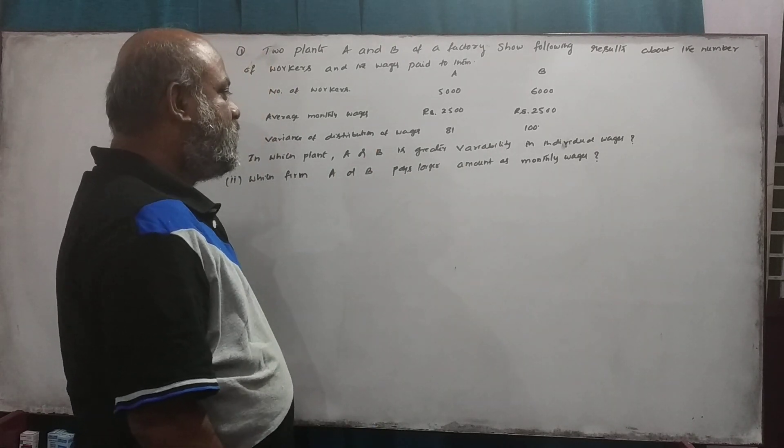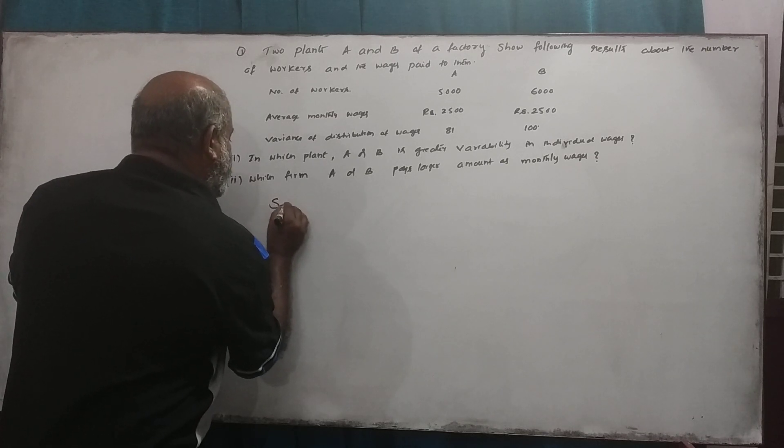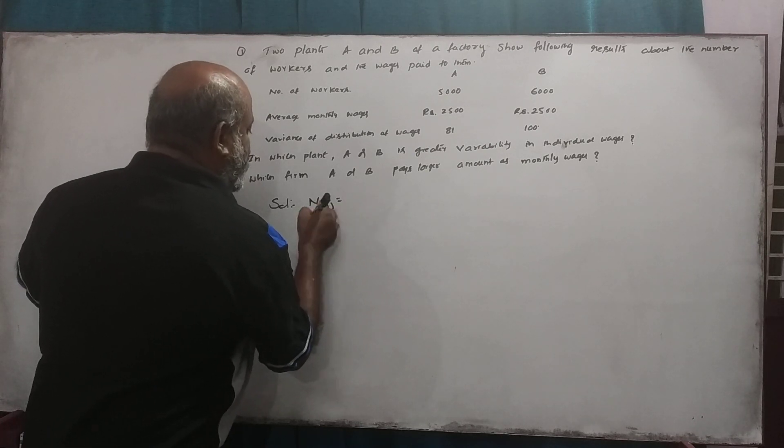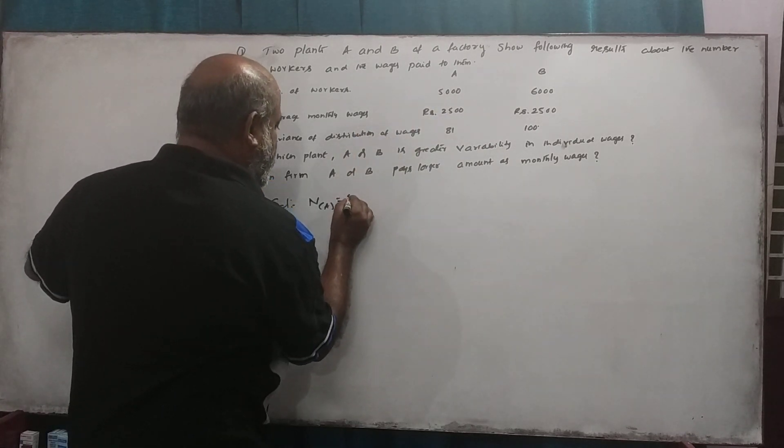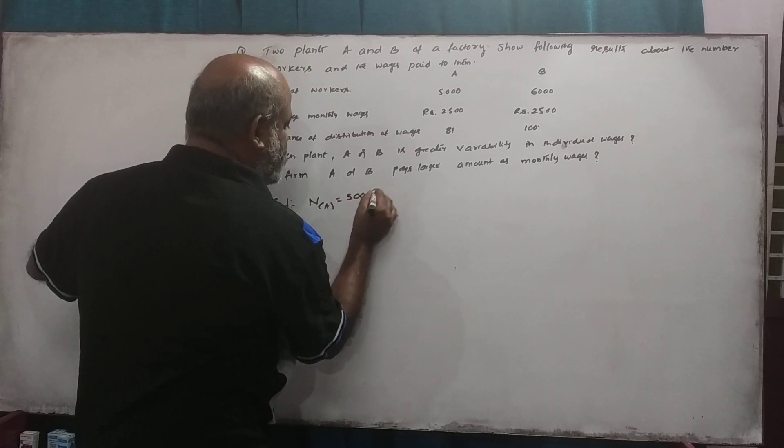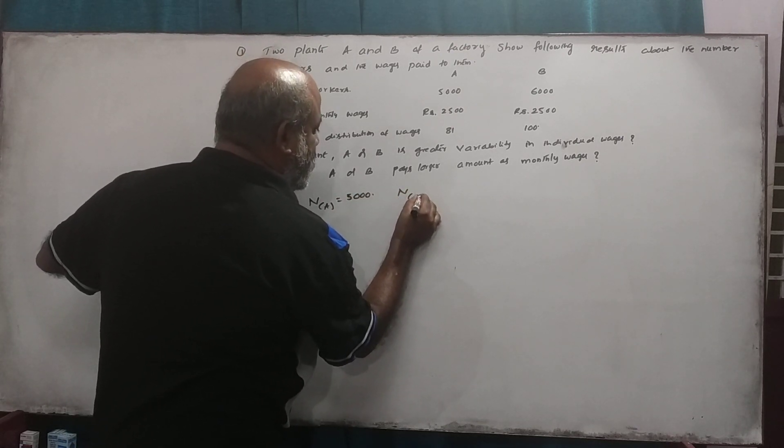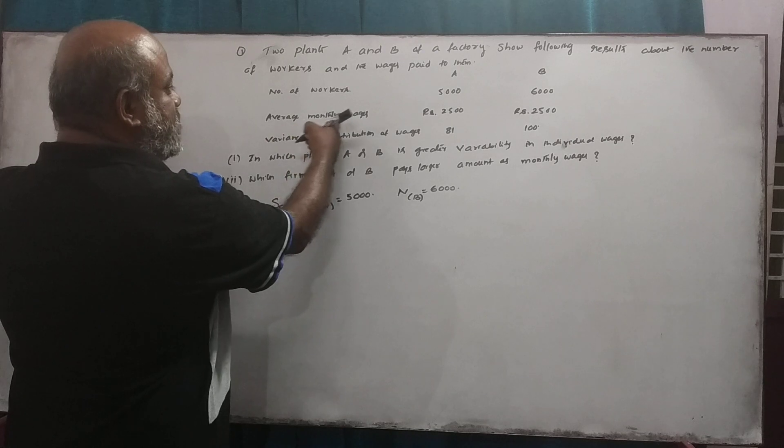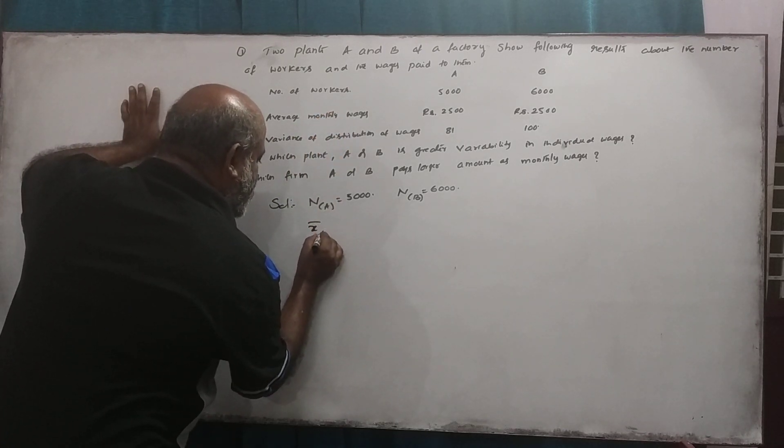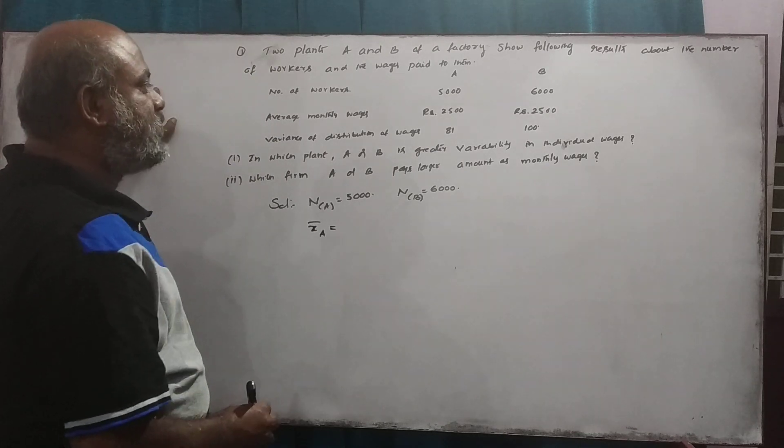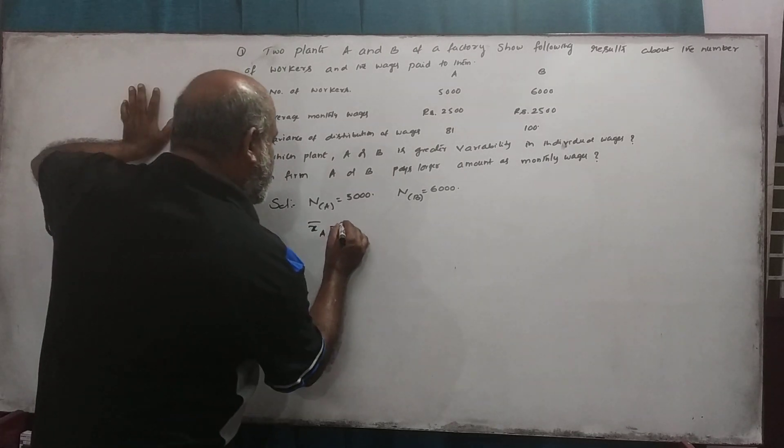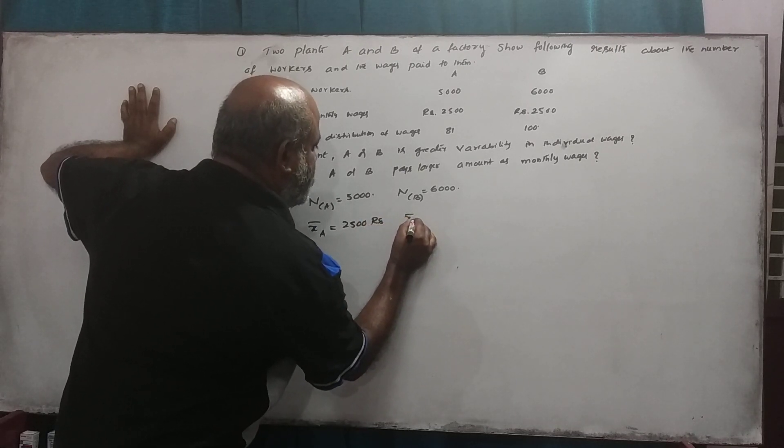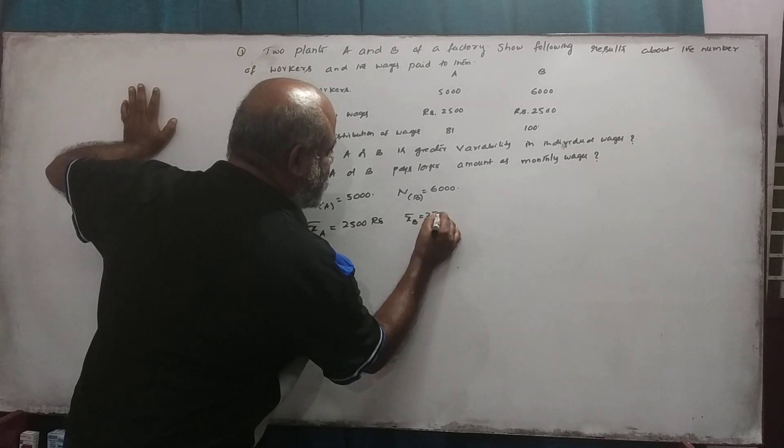A is B is 9. That is the solution. Number of A, number of workers. Number of B, number of workers. The variance is equal to each other.